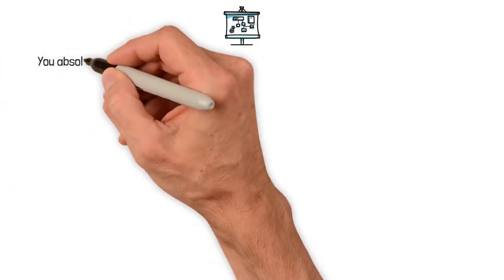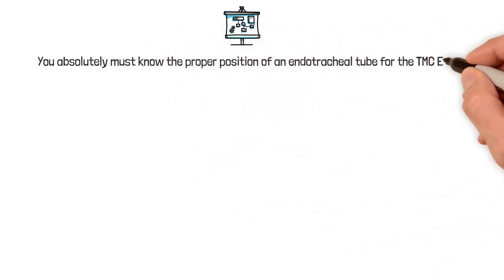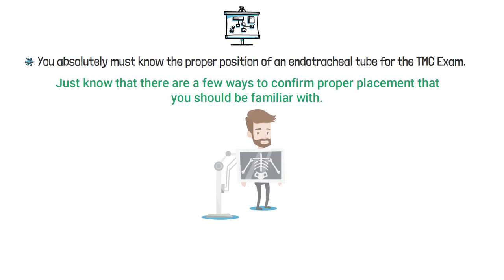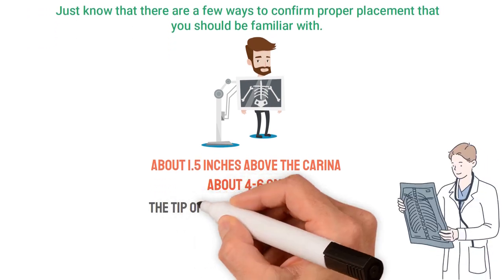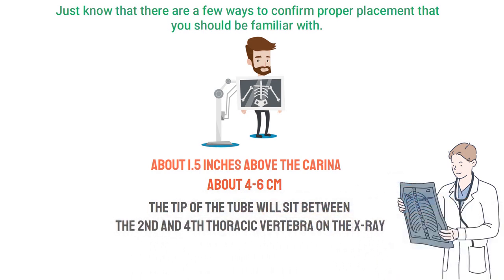First and foremost, you absolutely must know the proper position of an endotracheal tube for the TMC exam because you will see questions about it. Just know that there are a few ways to confirm proper placement that you should be familiar with. When looking at a chest X-ray, a properly positioned ET tube should appear about 1.5 inches above the carina, which to be more specific is about four to six centimeters. This means that the tip of the tube will sit between the second and fourth thoracic vertebrae on the X-ray.